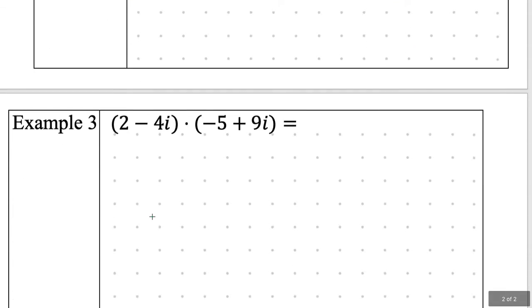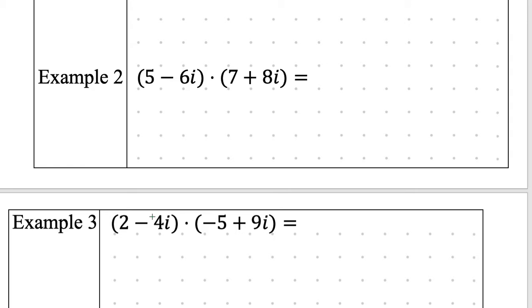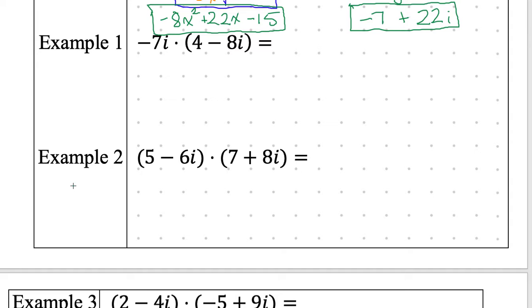Alright, let's do example 1 and 2 and 3. You guys should know how to do all of these now. If you show me all three examples, you may begin on the homework. This is Ellery presenting. We're going to distribute the negative 7i into the 4 and the negative 8i. So negative 7 times 4i is going to be negative 28i. And then negative 7 times negative 8i. The negatives cancel out. So you're going to have plus 56i squared. And i squared is equivalent to negative 1. And then in the correct form, you will have negative 56 minus 28i.